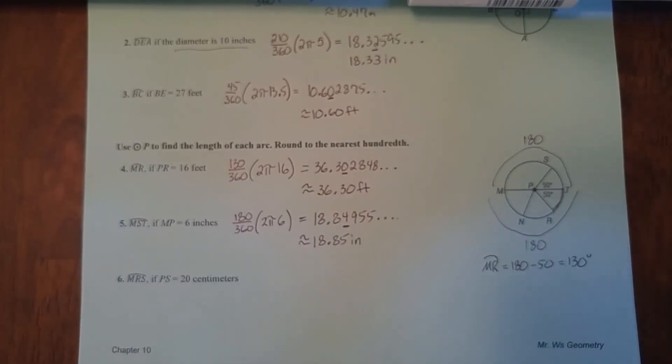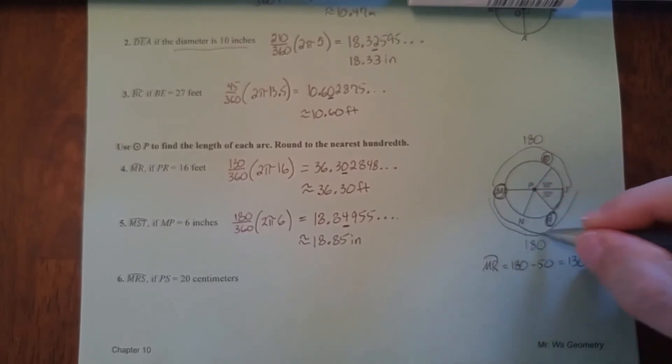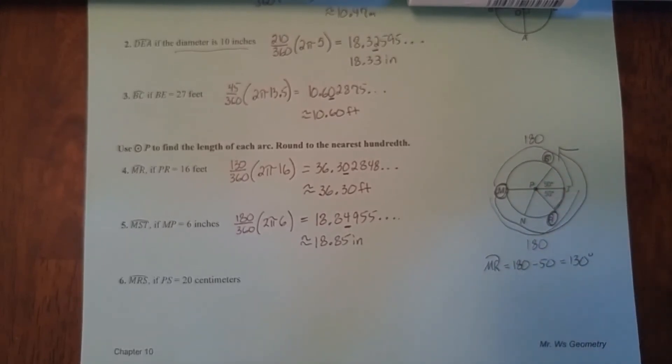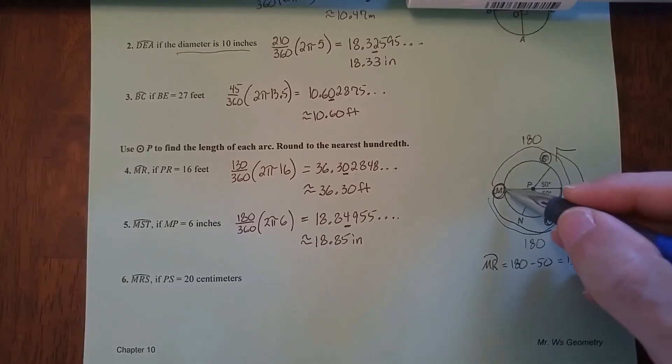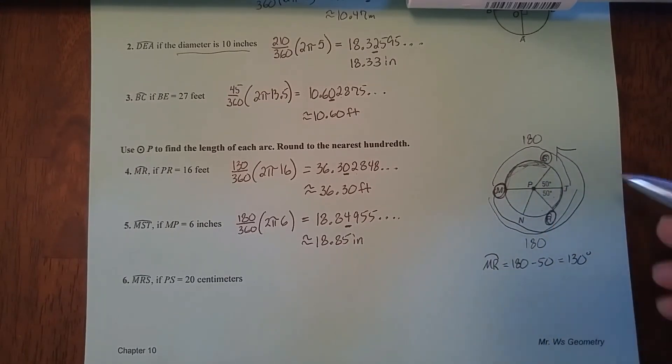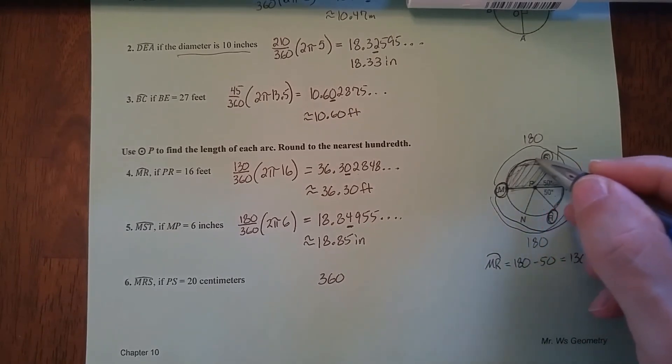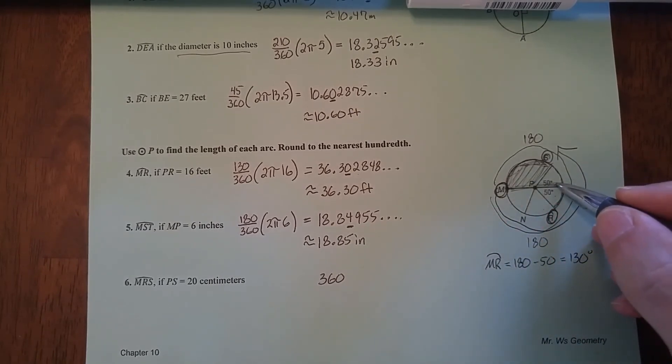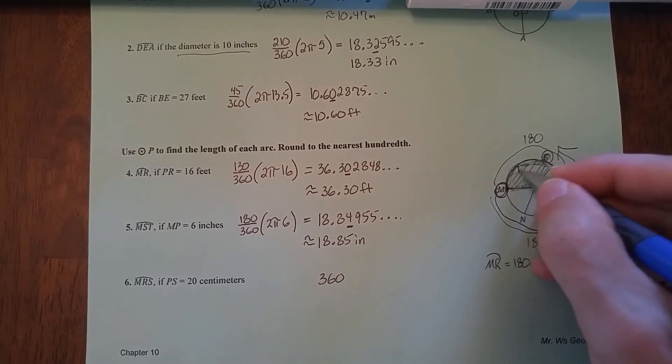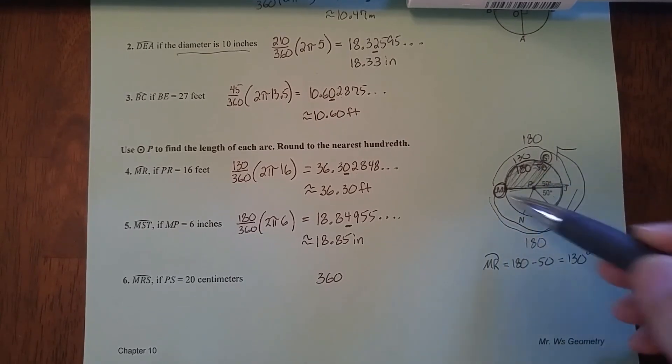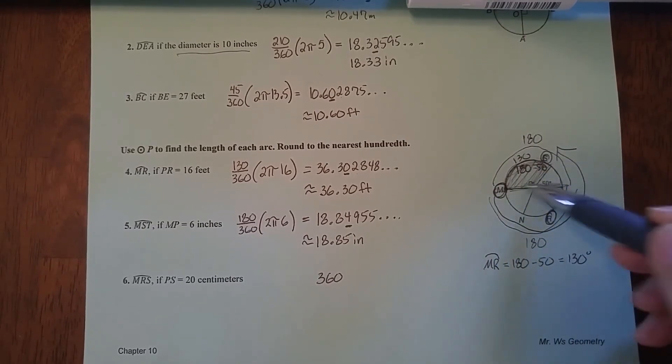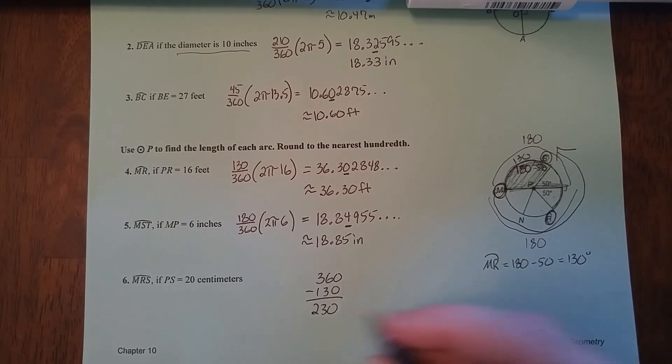Okay, last problem. Arc MRS. So this is M, there's R, there's S. So we're going to do the arc that goes around in this direction. In other words, it's the entire circle minus this little bit right here. Well, we know a whole entire circle is 360 degrees. The question is, what is this bit that we're subtracting? Well, remember, this is a diameter. That makes this 180 degrees. So if this is 50, that means this is 180 minus 50. So in other words, this part is 130. So again, MRS is going to be the whole circle minus this 130. So MRS is 230 degrees.